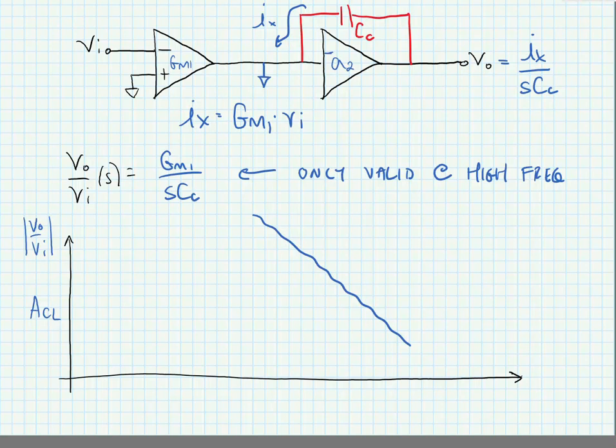And we're going to look for the frequency where the closed loop intersects with the open loop gain and we're going to try and set the second pole frequency of the amplifier equal to omega p2 at that particular closed loop gain.